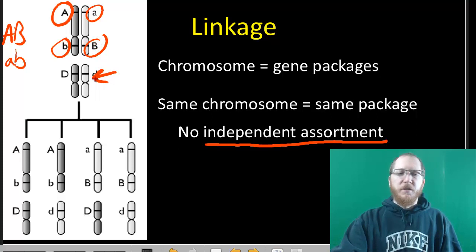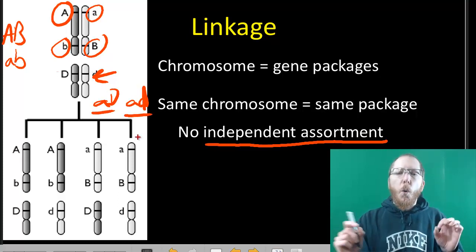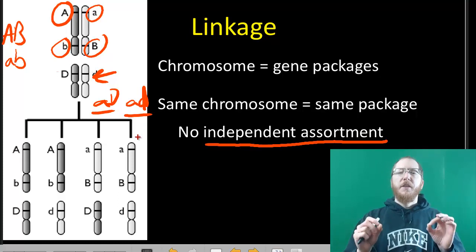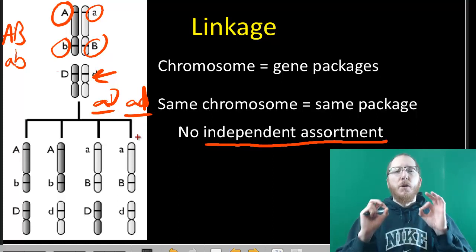Now if the genes are on a different chromosome, this doesn't happen because you can ultimately grab this chromosome that has little a, for instance, but I can grab it with either of these. I can get little a big D or I can get little a little D. It has no effect. So if it's on a separate chromosome, you will not have linkage. This only occurs if you're talking about things that are on the same chromosome.